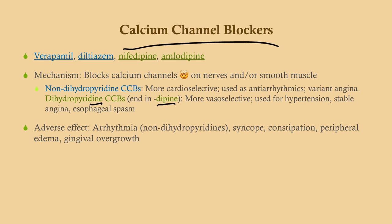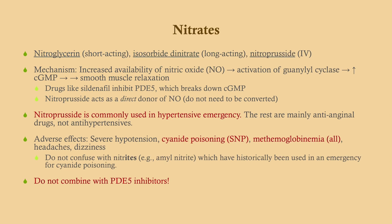Adverse effects of calcium channel blockers: arrhythmia with the non-dihydropyridines, since those are more cardio-selective. Syncope and constipation — because we're working on smooth muscle, and the gut is lined with smooth muscle, so it can slow everything down. Peripheral edema and gingival overgrowth are also adverse effects.